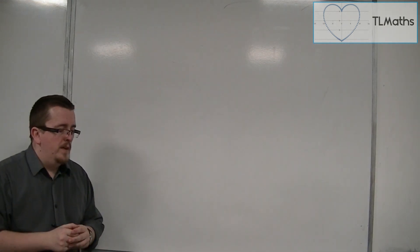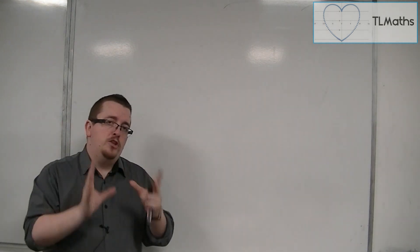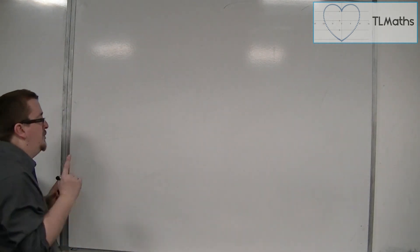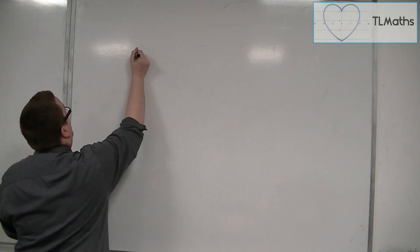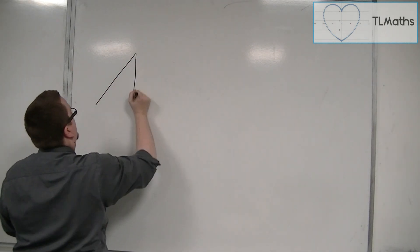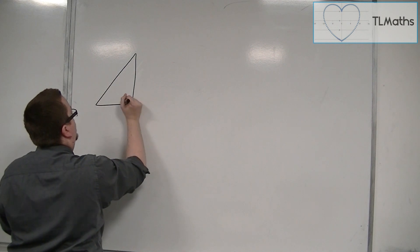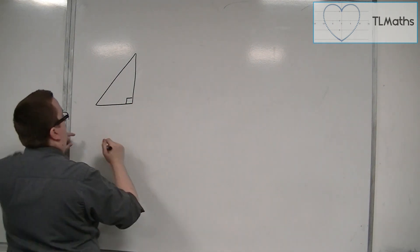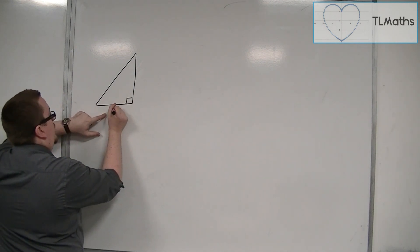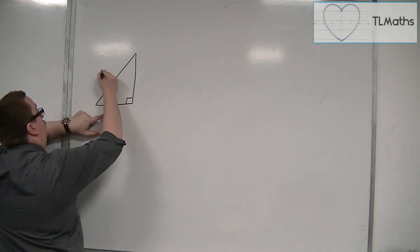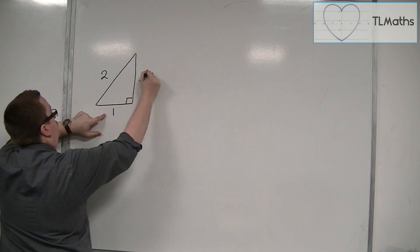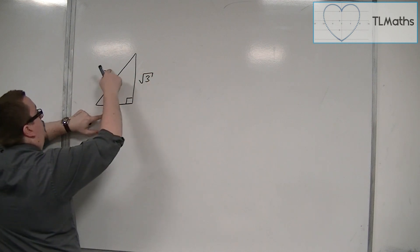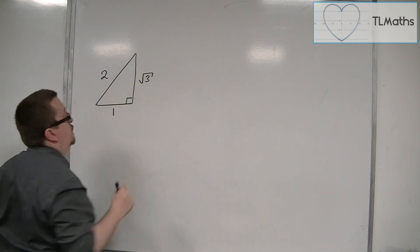So first I'm going to do them in degrees. So the two triangles, here's the first one. Both of them are right-angled triangles. The first one looks like this. It has sides of length 1, 2, and root 3. So 1, 2, 3, but then we have it rooted.